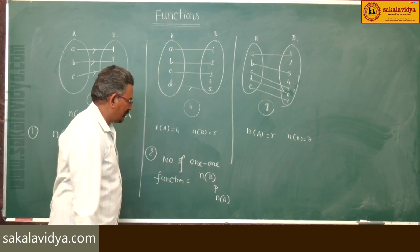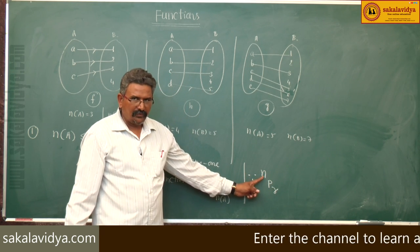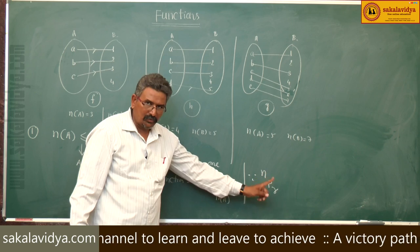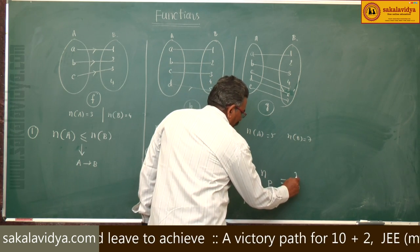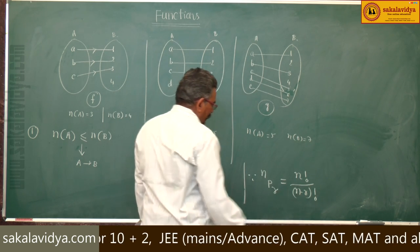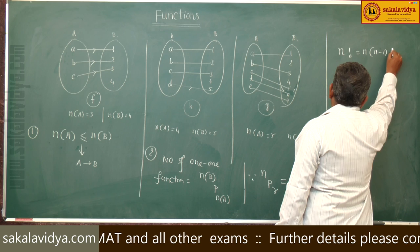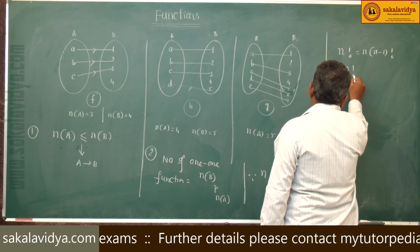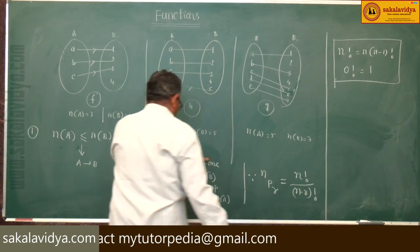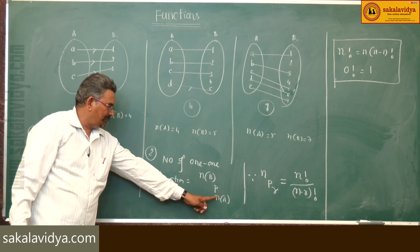This P means permutations. I will give the formula also here: nPr. nPr means number of n objects taken r at a time without repetition. This can be written as n factorial divided by (n - r) factorial. Here, see, n factorial means n times (n - 1) factorial, whereas 0 factorial we can consider as 1. So using this, the number of one-to-one functions can be defined from A to B with formula n(B) P n(A), where P stands for permutations.